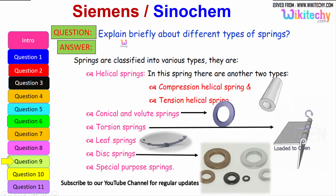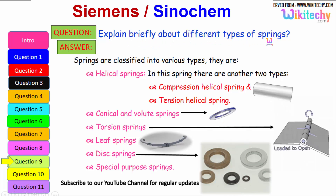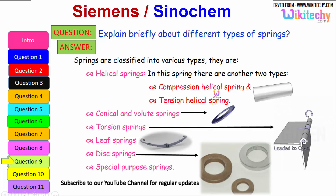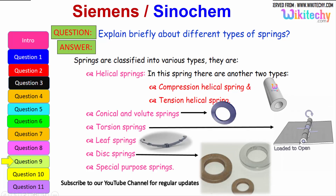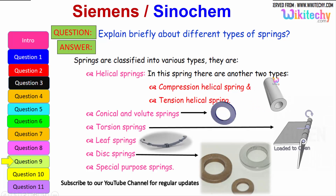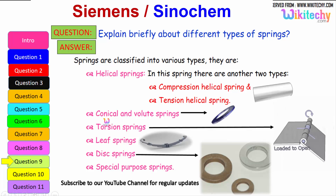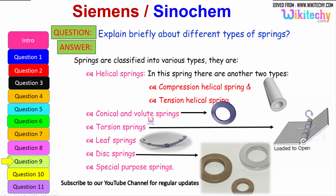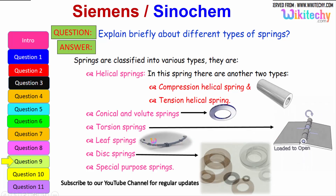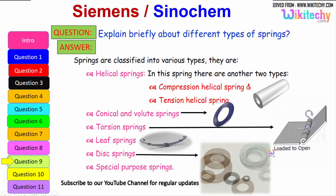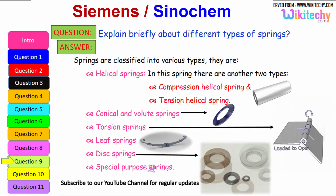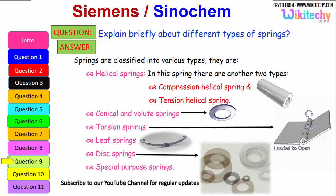Now let us see briefly about the different types of springs. Springs are classified into various types: helical springs, which are further divided into compression helical springs and tension helical springs; conical volume springs; torsion springs; leaf springs; disk springs; and special purpose springs.